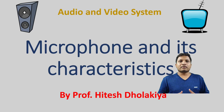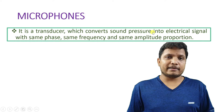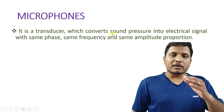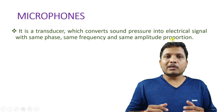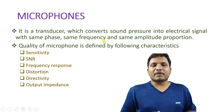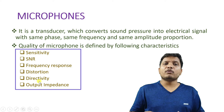In this session, first I will explain what is a microphone. Basically, a microphone is a transducer that converts sound signal into electrical signal. That electrical signal has the same phase, same frequency, and same amplitude as the sound. The basic parameters for understanding microphone characteristics are: sensitivity, SNR, frequency response, distortion, directivity, and output impedance.